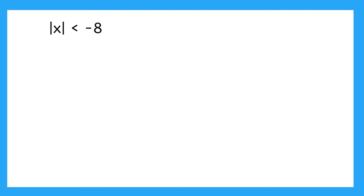Last example. It says the absolute value of x is less than negative 8, and we're going to test these solutions. But before we start, I want us to take a good look at our inequality. It is asking for what values of x will the absolute value be less than negative 8. Well, absolute values are always positive or zero, so no matter what value we plug in, we'll get a positive number. Can you think of any positive numbers that are less than negative 8? No way — positive numbers are always greater than negative numbers. So do you think any of these test solutions will give us a true inequality? Nope. But let's test them just to be sure.